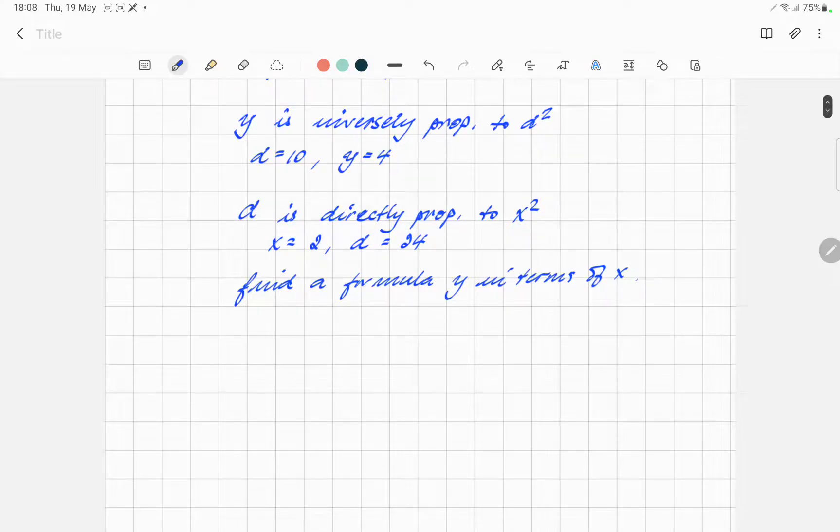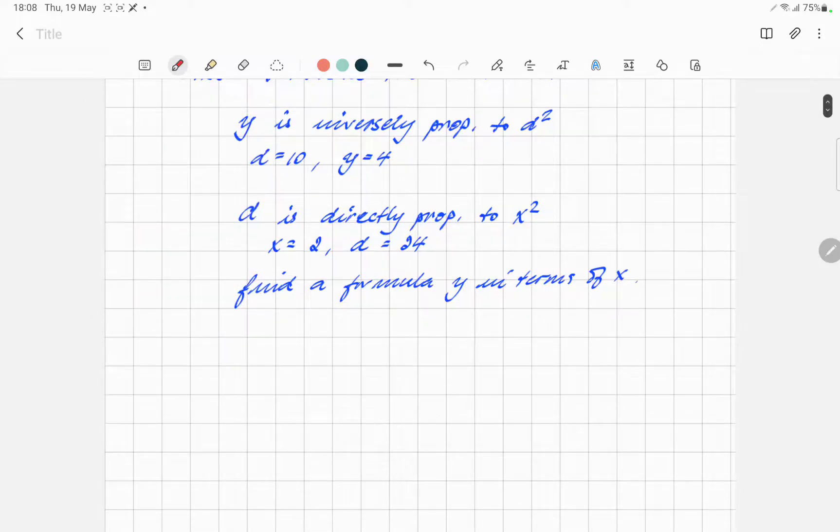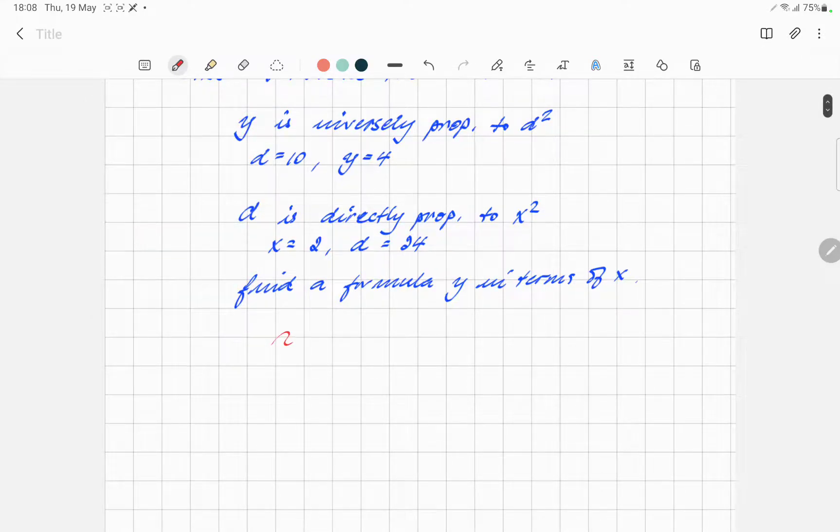So the first thing, let me switch to this. Okay, so what we have is, you remember, first of all, we start with y is proportional to. Now, it's inversely proportional, so it's 1 over. Inversely always means 1 over d squared. Is it the same? Yep, that's what you've done there. Absolutely correct.